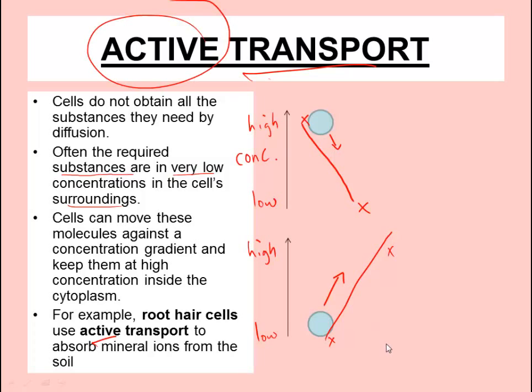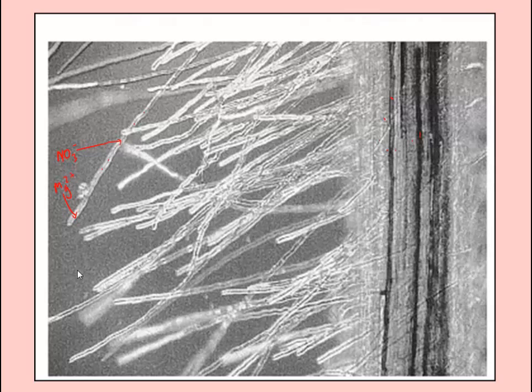It's active transport because it requires extra energy input. An example would be root hair cells of plants. Root hair cells have a huge surface area generated by projections out into the soil. If we've got NO3- (nitrates) or Mg2+ (magnesium ions) out in the soil, they're already at a much higher concentration inside the root hair cell and in the xylem. So to get nitrate ions and magnesium ions into the root hair cell, we need to move them uphill against a concentration gradient — therefore these cells take up nitrates and magnesium ions by active transport.